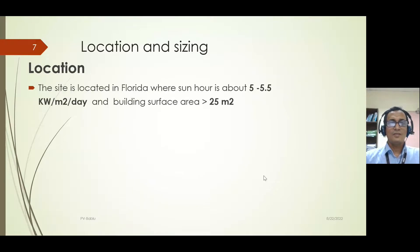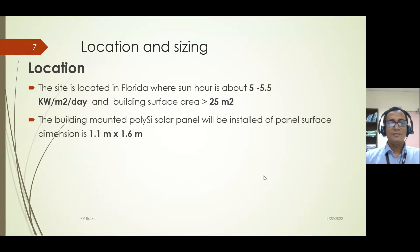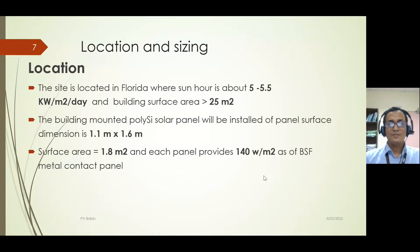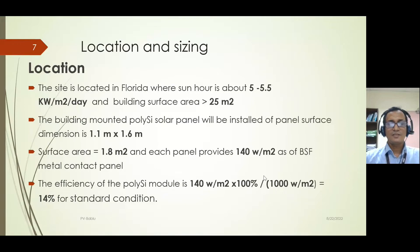So 2.5 kW or 2500 W of power is required. The location is Galveston, Florida, with 5 to 5.5 kWh per meter square per day insolation, and the building surface area is about 25 meter square. Building-mounted polysilicon panels are installed — each panel has a surface area of 1.1 m width by 1.6 m height, giving 1.8 meter square per panel, providing 140 W per meter square as rated power for back surface field contact polysilicon panels. The efficiency is 140 W/m² divided by 1000 W/m², giving 14% under standard conditions of 25°C and 1000 W/m² irradiation.